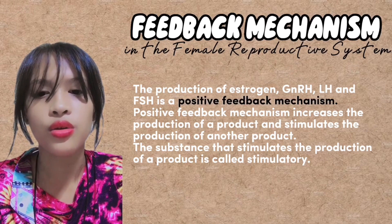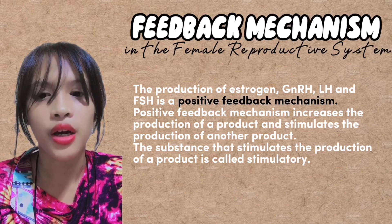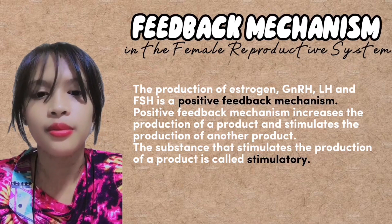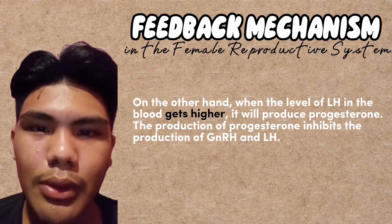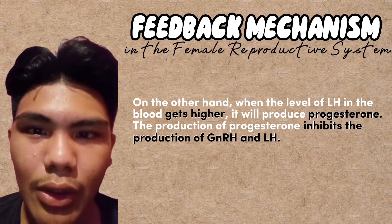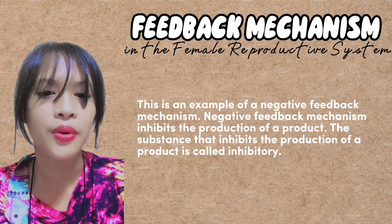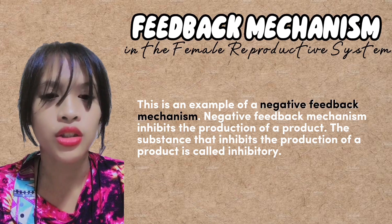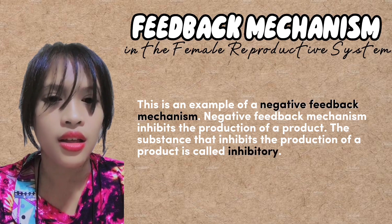Positive feedback mechanisms increase the production of a product and stimulate the production of another product. The substance that stimulates the production of a product is called stimulatory. On the other hand, when the level of LH in the blood gets higher, it will produce progesterone. The production of progesterone inhibits the production of GnRH and LH — this is an example of a negative feedback mechanism. Negative feedback mechanisms inhibit the production of a product. The substance that inhibits the production of a product is called inhibitory.